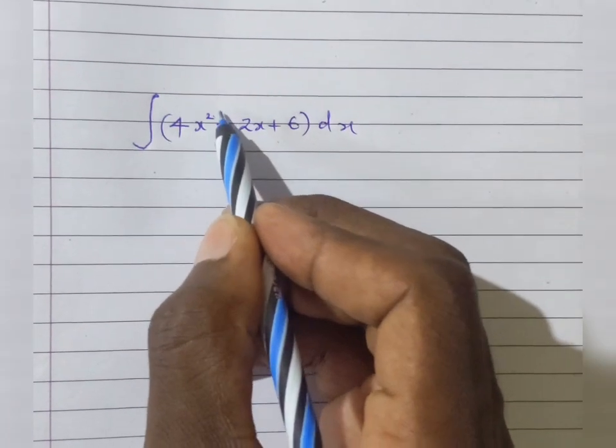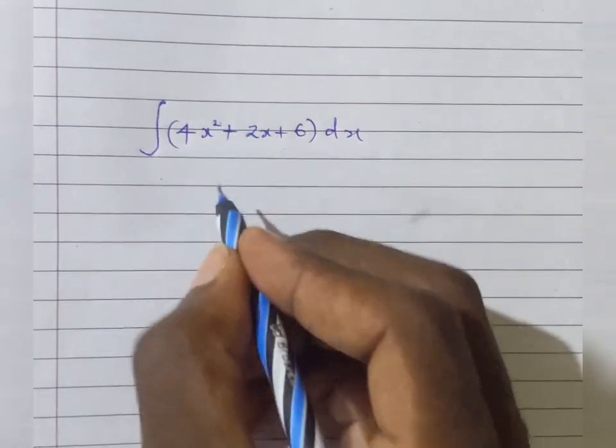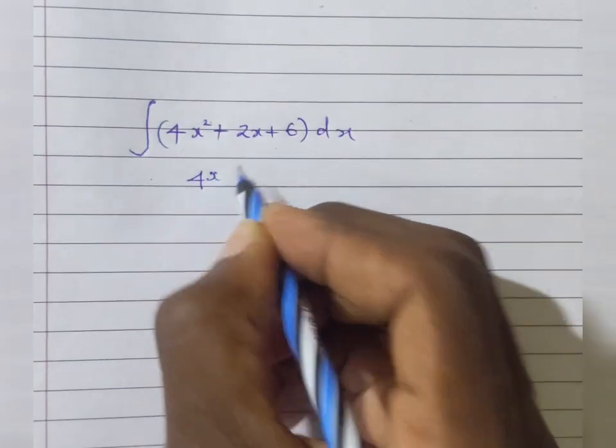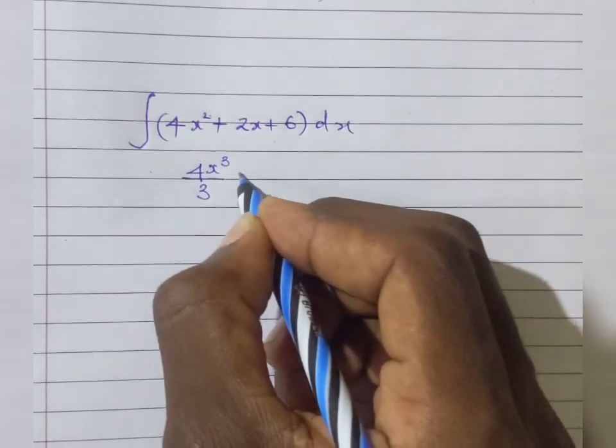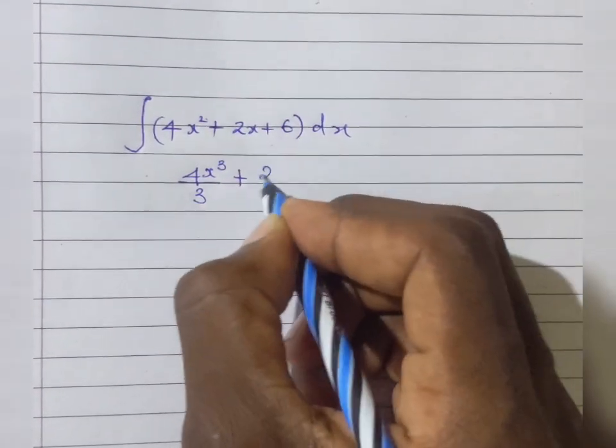What's the power here? It's 2. So I'm going to increase the power by 1 to 3. So this will be 4x to the power 3 over 3. What's the power here? It's 2, so it will be 1 here.